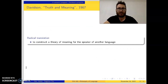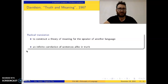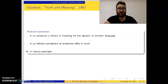Another empirical point is radical translation. In radical translation, we construct a theory of meaning for the speaker of another language — suppose it is a language you know nothing about. You are trying to construct a theory of meaning for that language without any dictionary. How would you come up with meaning-specifying theorems for that language? For Davidson, we need to use the charity principle.